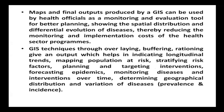Maps and final outputs produced by GIS can be used by health officials as a monitoring and evaluation tool for better planning, showing the spatial distribution and differential evolution of diseases, thereby reducing the monitoring and implementation cost of health sector programs. GIS techniques through overlaying, buffering, and rationing give outputs that help in indicating longitudinal trends, mapping populations at risk, stratifying risk factors, planning and targeting interventions, forecasting epidemics, monitoring diseases and interventions over time, and determining geographical distributions and variations of diseases with respect to their prevalence and incidence.